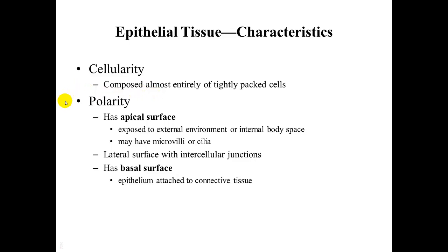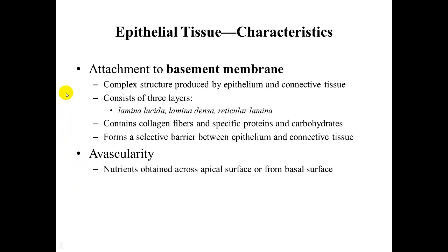Epithelial tissue exhibits polarity — it has both an apical surface and a basal surface. The apical surface is exposed to the external environment or to an internal body space, often called a lumen, and it may have either microvilli or cilia. The basal surface is attached to the connective tissue that helps hold it in place. On the lateral surface, you have intercellular junctions that attach one cell to the next.